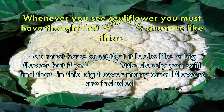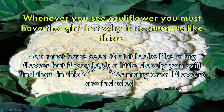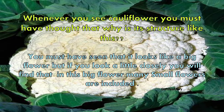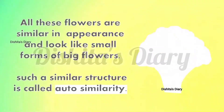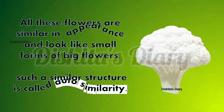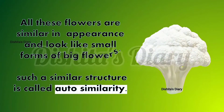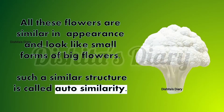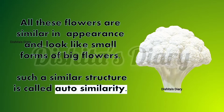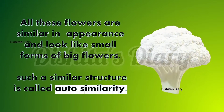Whenever you see cauliflower, you must have thought about why it is structured like this. You must have seen that it looks like a black flower. But if you look a little closely, you will find that in this black flower many small flowers are included. All these flowers are similar in appearance and look like small forms of a big flower. Such a similar structure is called self-similarity.